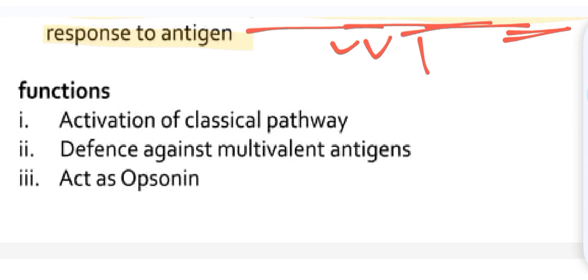Functions of IgM: It plays an important role in the activation of classical pathway and defense against antigens, and it also acts as opsonin.